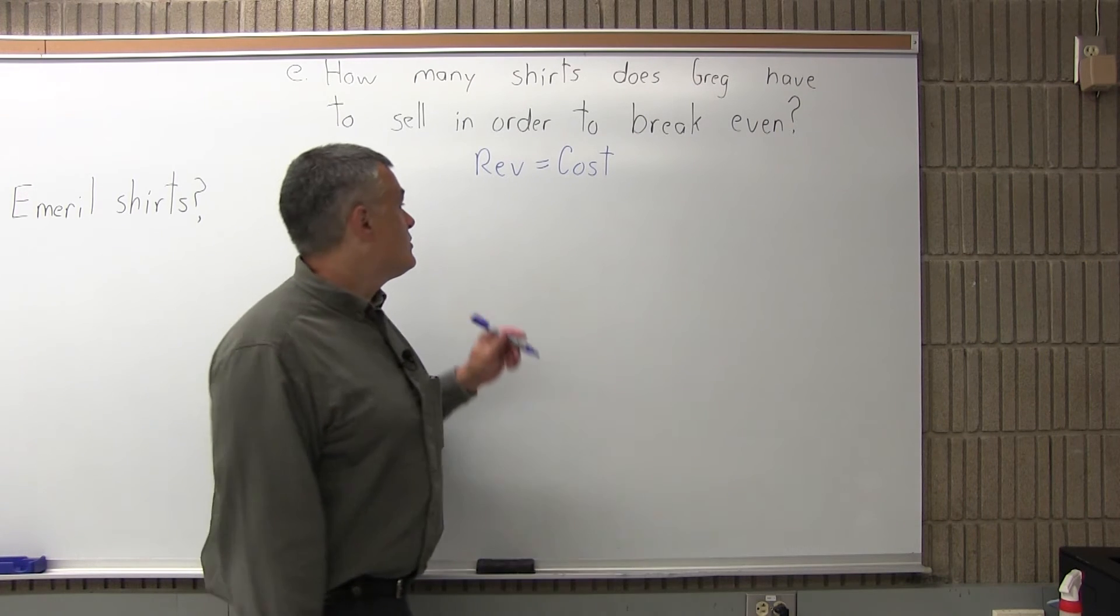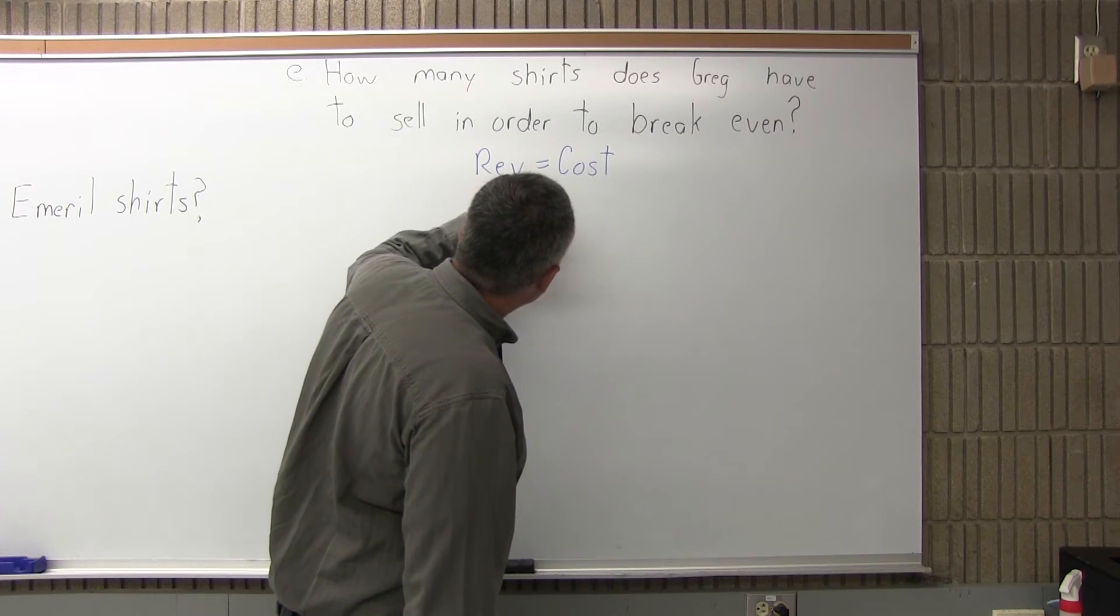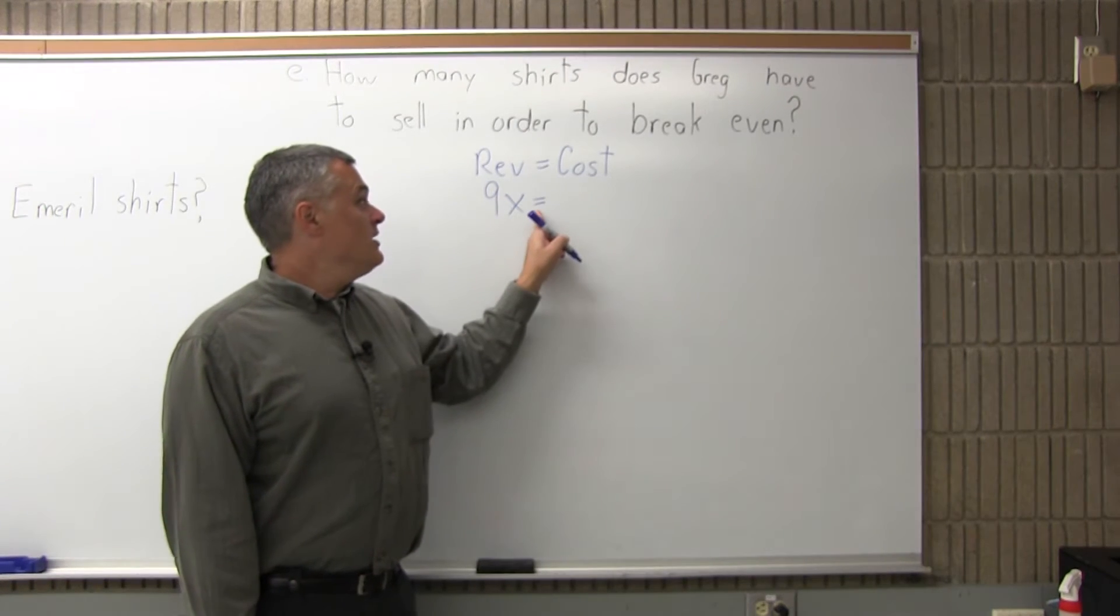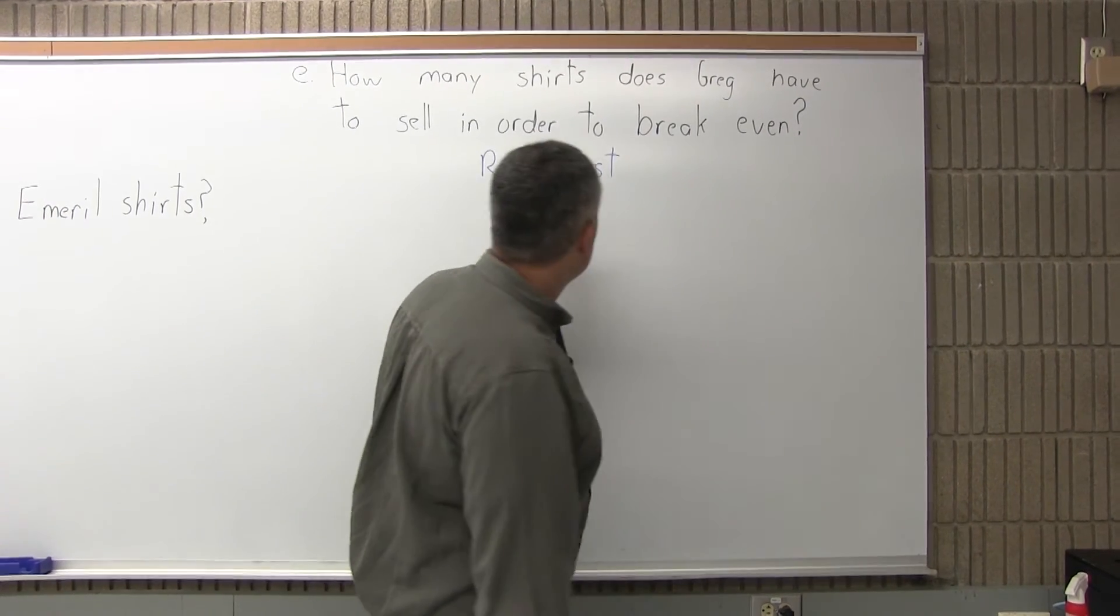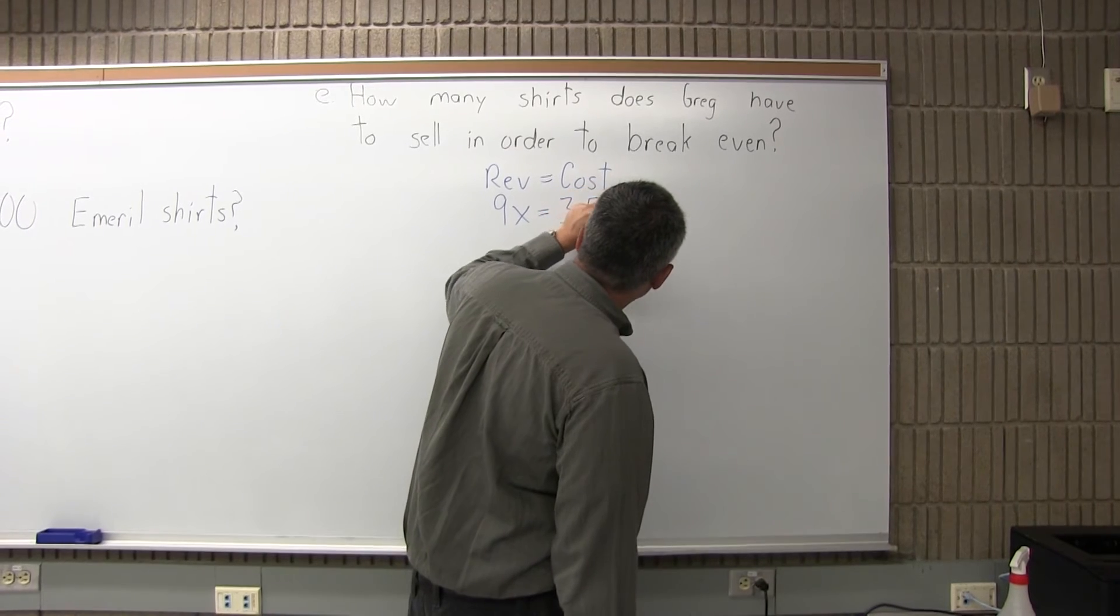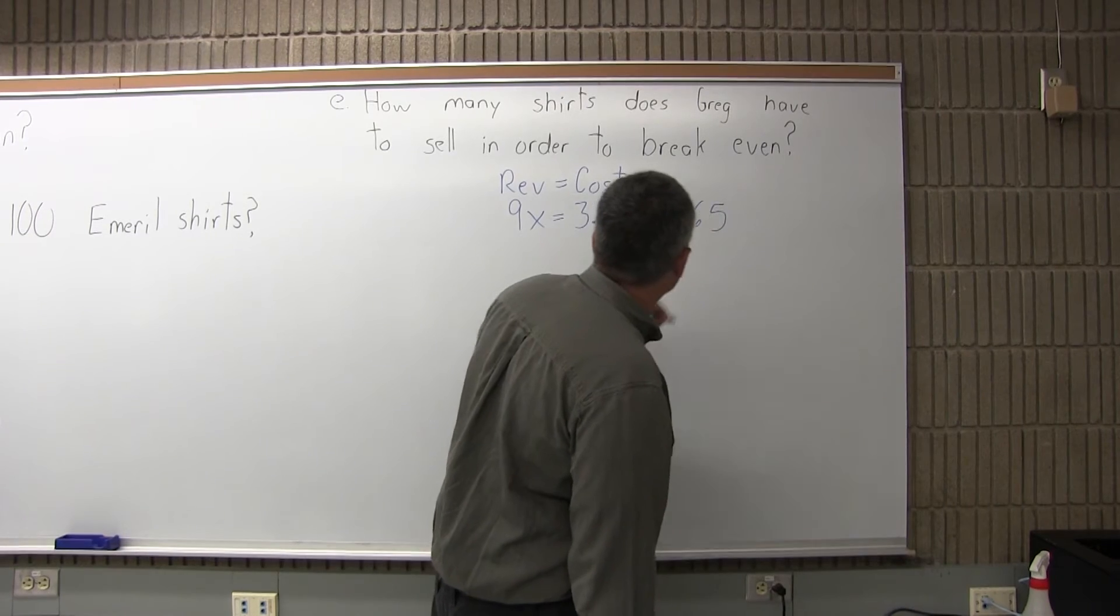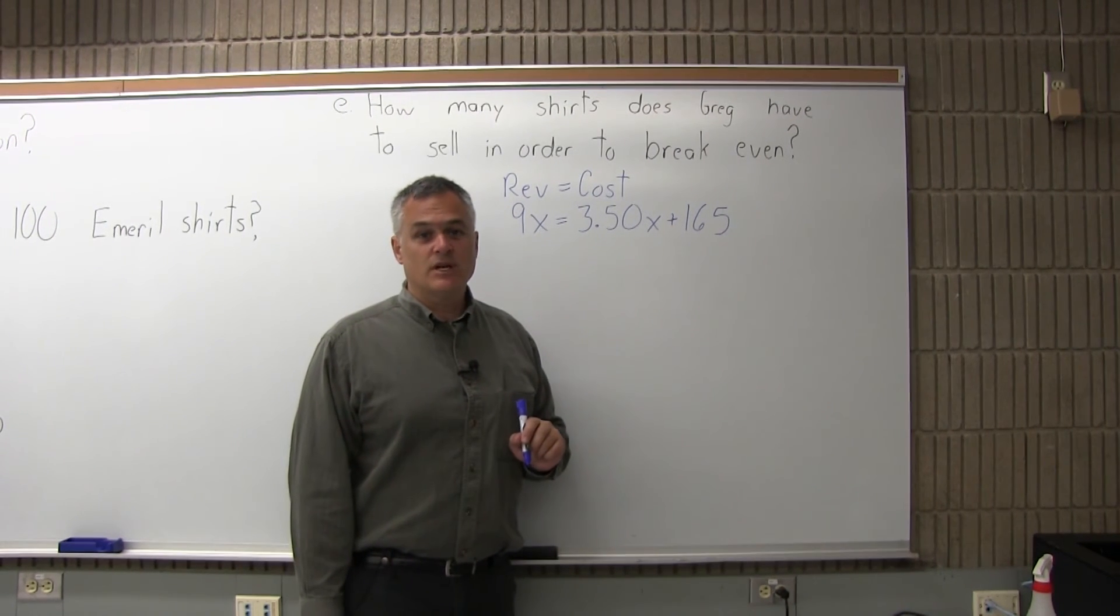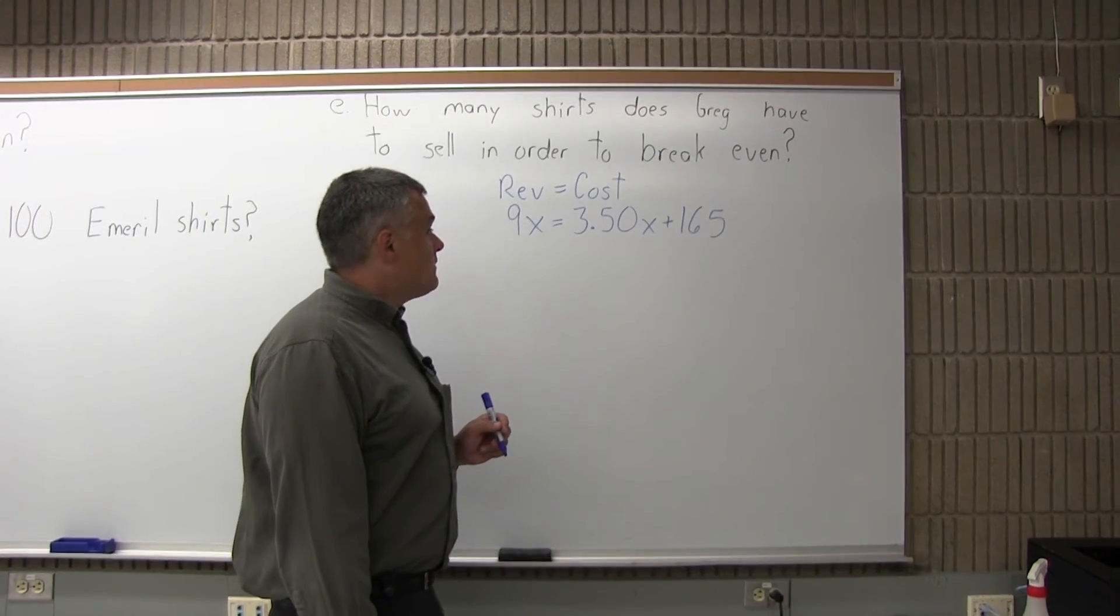Now for this particular problem, from Part A we were able to determine that the revenue equation is 9 times X, 9X. And we'll set that equal to the cost equation, which in Part C we were able to calculate is 3.50X plus 165. That's the cost equation. And again, we did that in Part C of this problem.